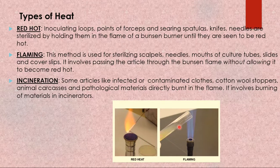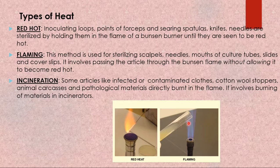Flaming is used to destroy vegetative organisms on the surface of glass slides, cover slips, cover glasses, and mouths of culture tubes and flasks. The item is just passed through the flame — it does not become red hot, just heat is applied to it.